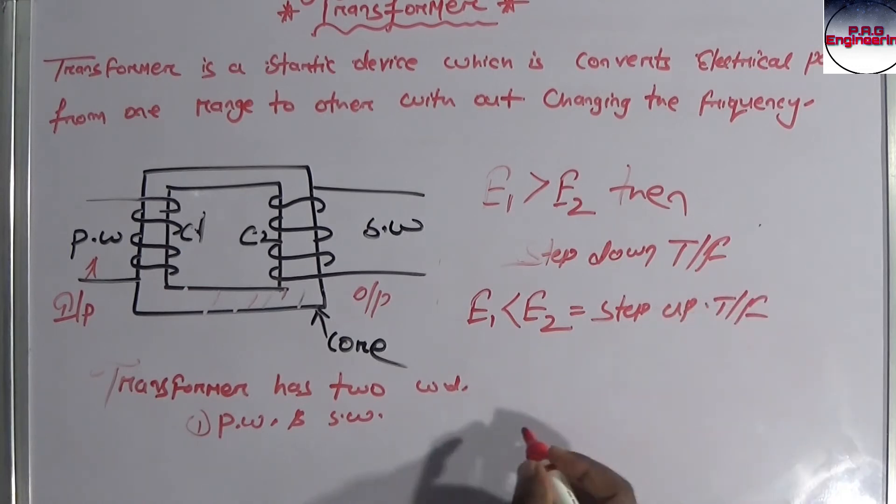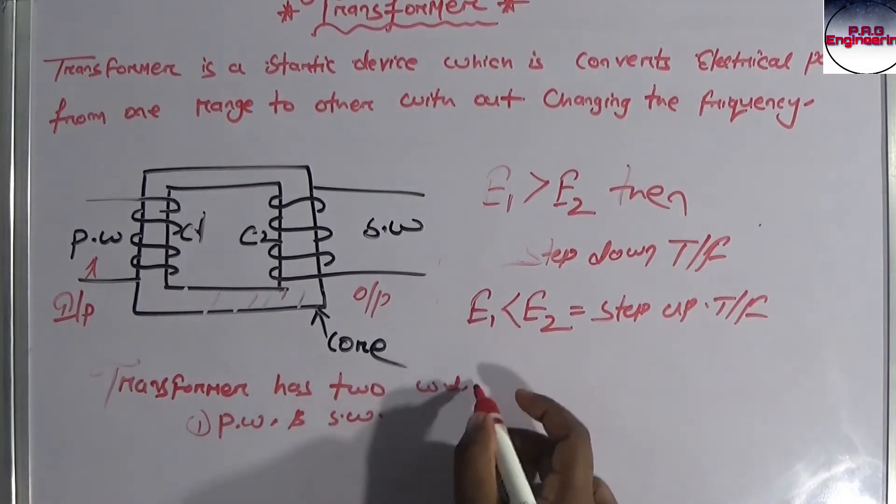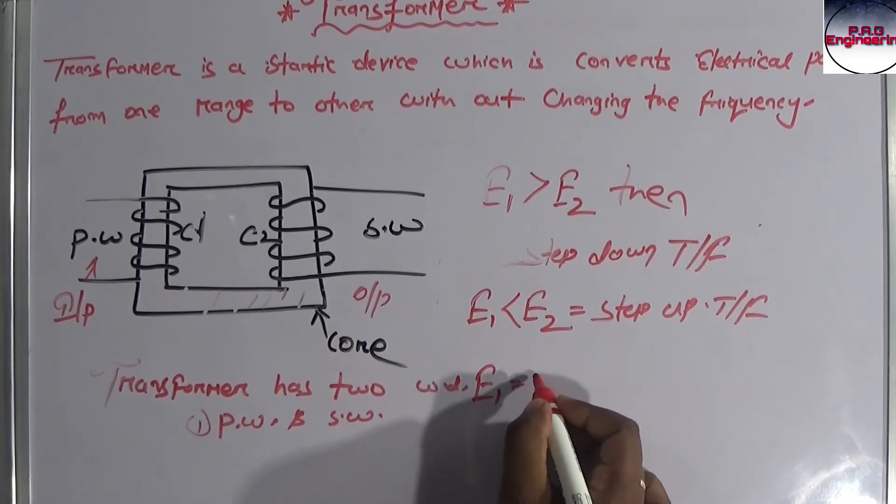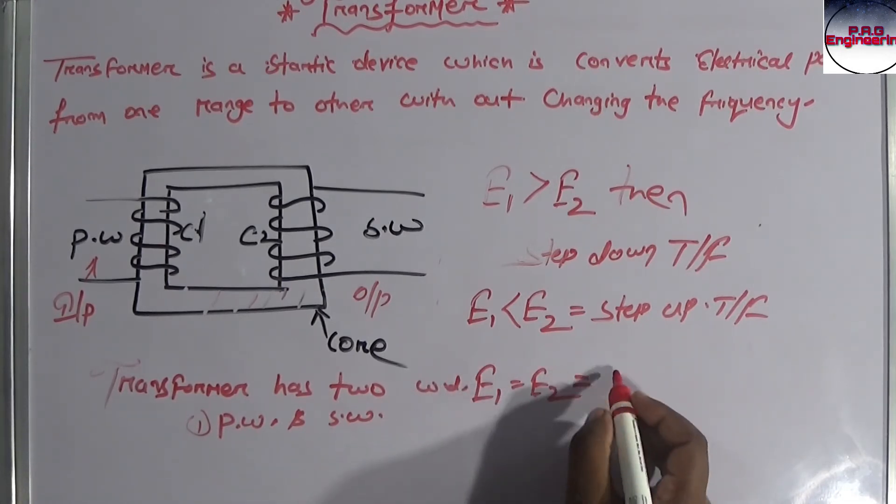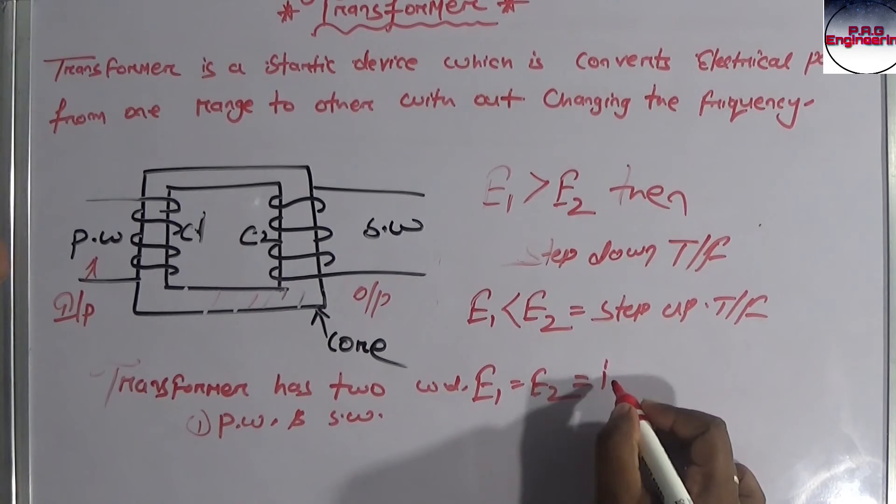Next, E1 equal to E2, this is the isolator transformer.